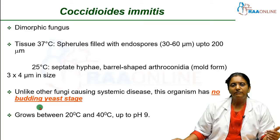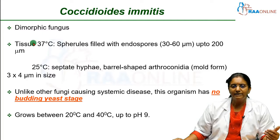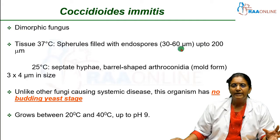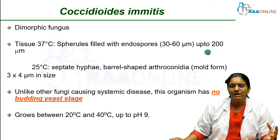Coming to the fungus Coccidioides imitis: it is a dimorphic fungus, but at 37 degrees centigrade, among all the other four organisms, this is the only one which forms spherules. It does not form a yeast form but forms a big spherical mass known as a spherule, which can be 30 to 60 microns in diameter, extending up to about 200 microns in the tissues, and this will be filled with numerous spores.